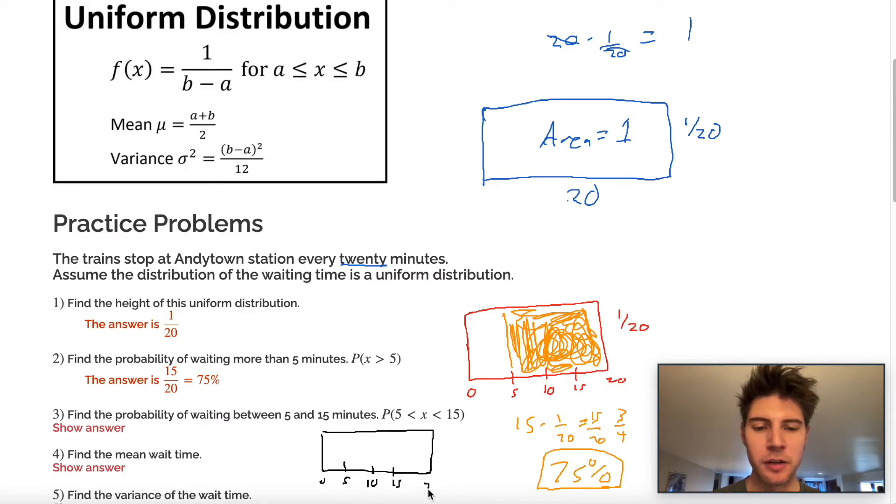And the height is still one over 20. Now we're shading between five and 15 because it says the probability of waiting between five and 15 minutes. So we want all of this.